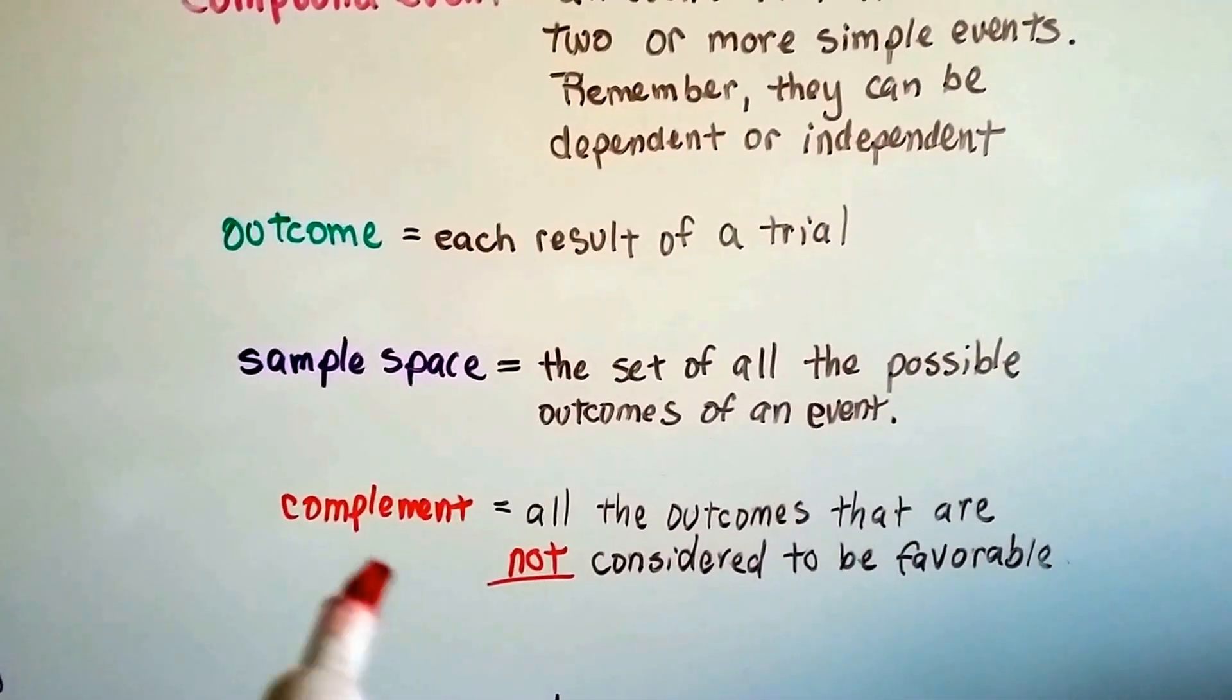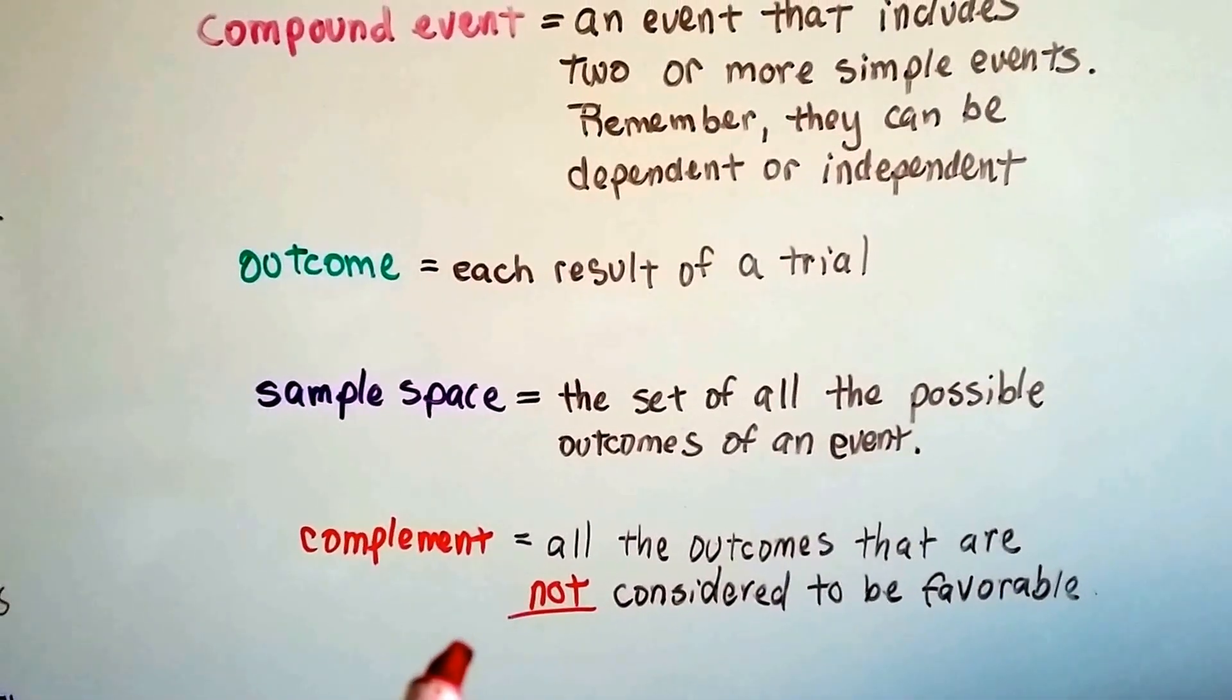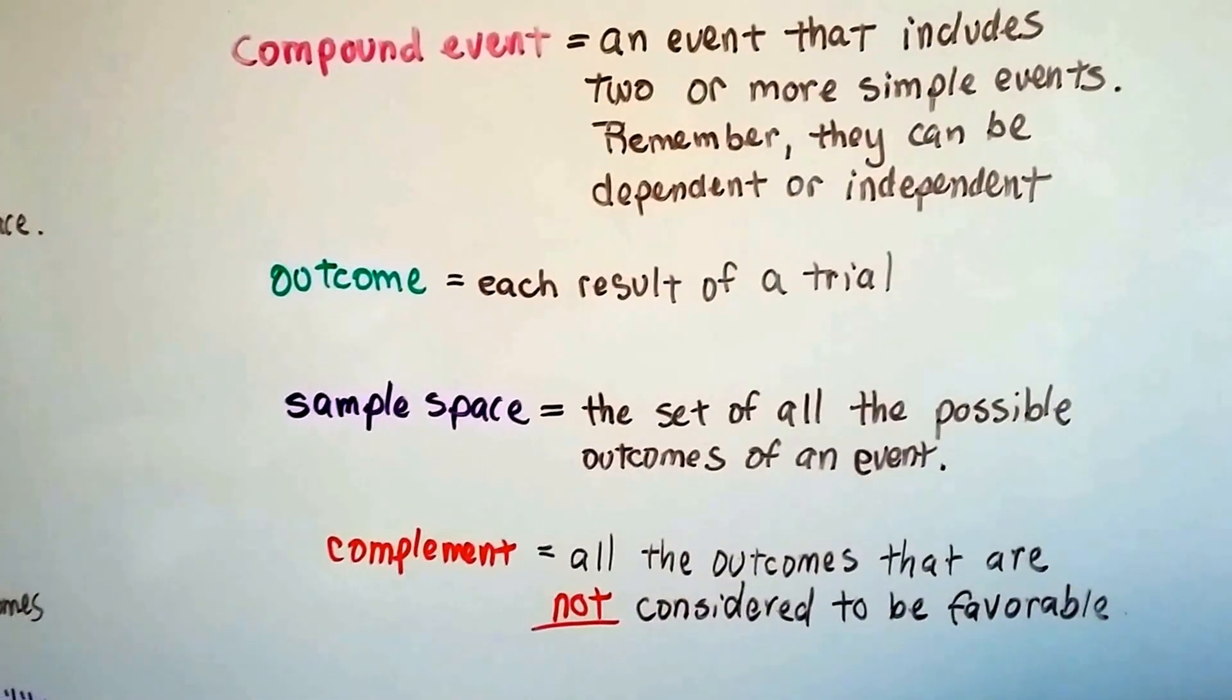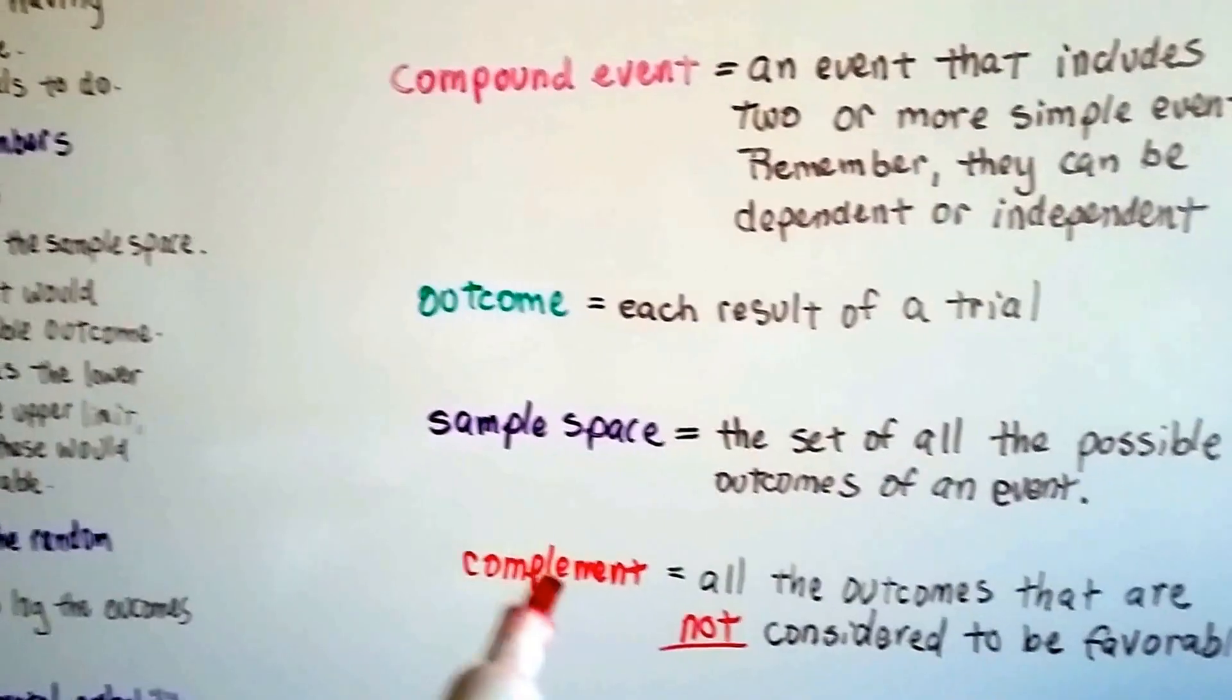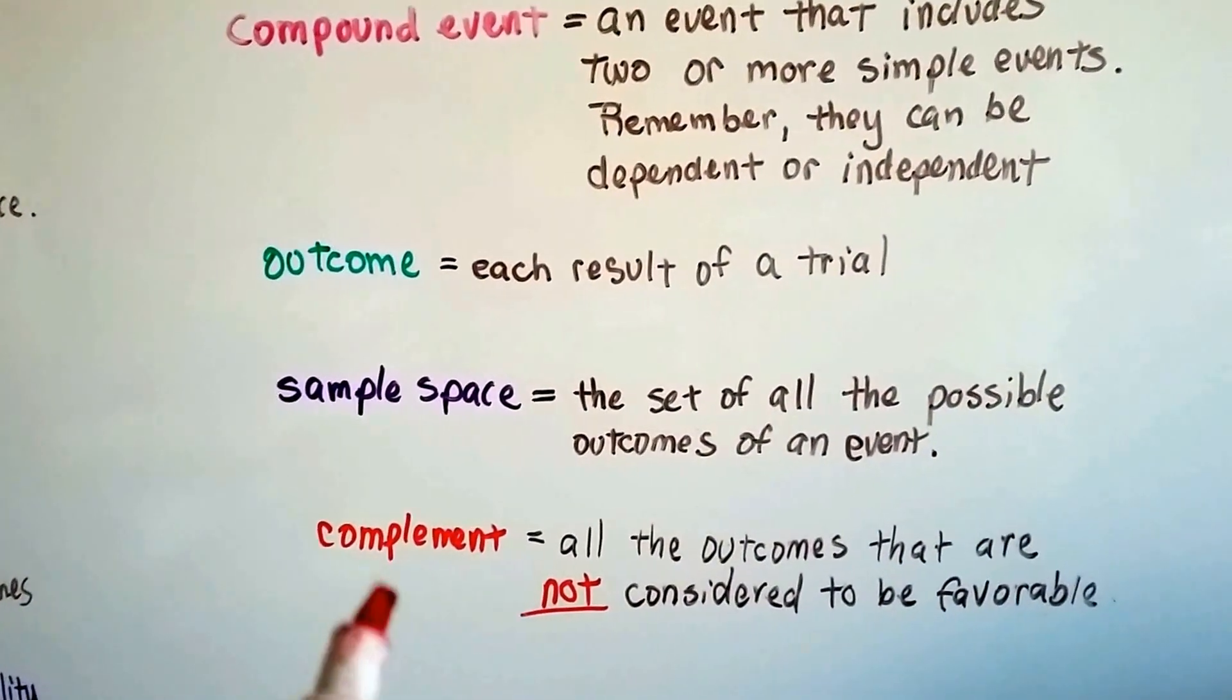And the complement would be all the outcomes that are not considered favorable. So if you said that 1 and 2 would be the favorable outcomes of 1 through 10, then 3, 4, 5, 6, 7, 8, 9, 10, would be the complement.